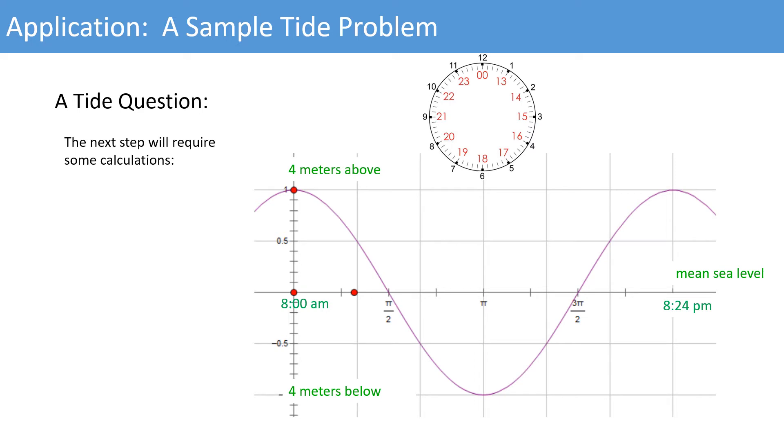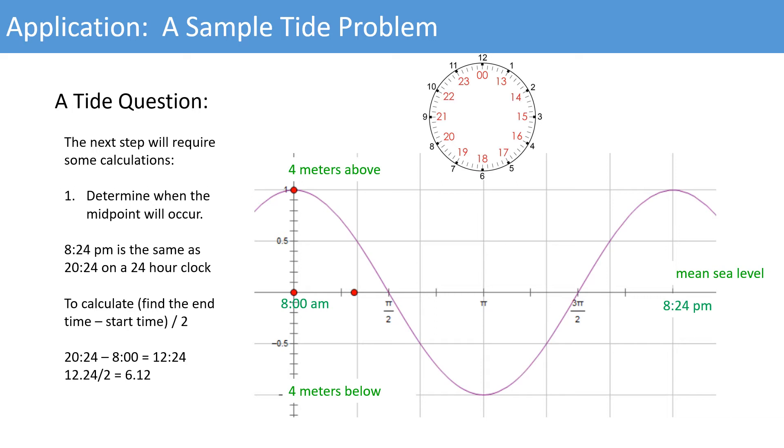The next step will require some calculations to determine when the midpoint will occur. 8:24 p.m. is the same as 20:24 on a 24-hour clock. To calculate, find the end time minus the start time and divide by 2. This gives us 20:24 minus 8:00 equals 12:24. Dividing 12:24 by 2 gives 6:12. That means the midpoint occurs at 8 a.m. plus 6:12, which is 2:12 p.m.